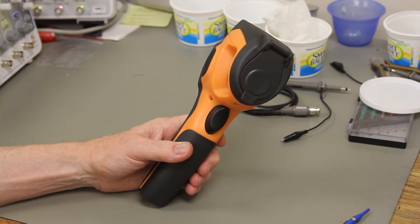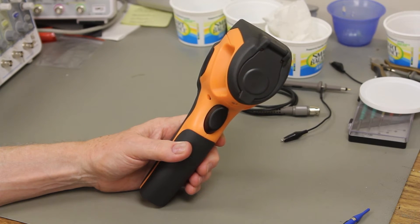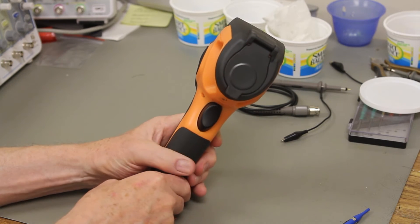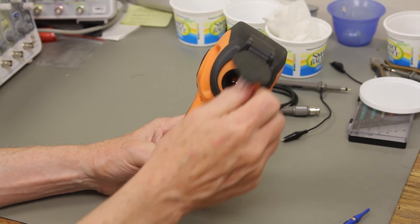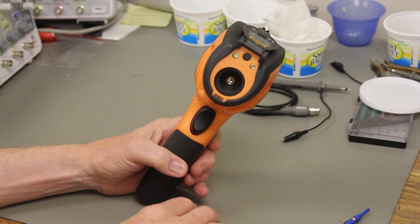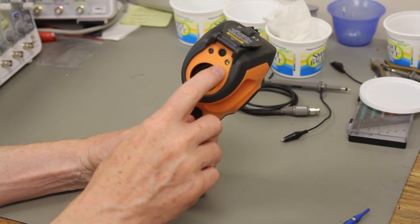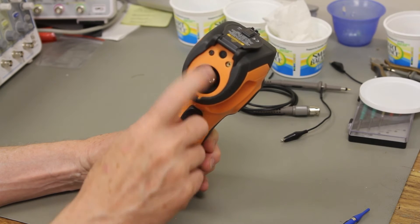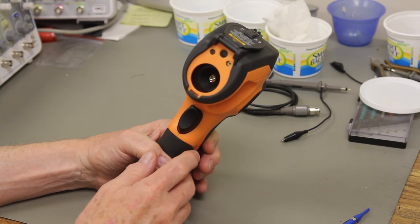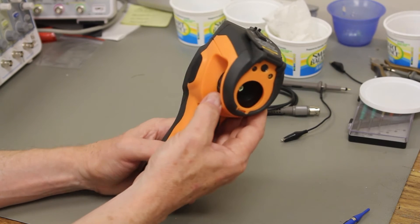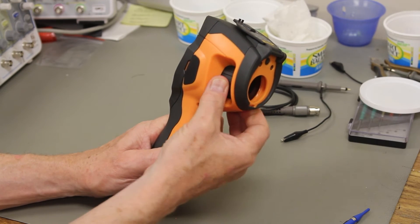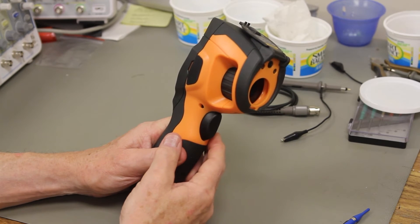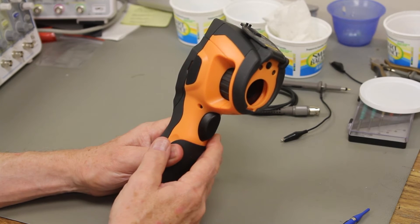Here we see the other end of the thermal imaging camera and I just want to point out three or four features on it. First of all, here's the aperture and the cover and you can see the different parts that are here. There's a laser output, the pointer, and there's a LED white light general illuminator. This part here has a focus control that you can work with either hand and that's useful for sharpening up your image and getting better temperature numbers.